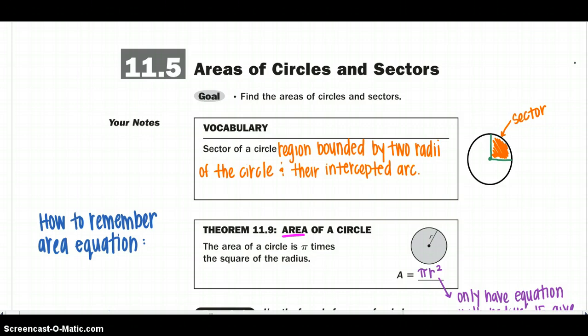A sector of a circle is the region bounded by two radii of the circle and their intercepted arc. So over here I have drawn a circle and I have drawn my two radii by the green portion and then the part that is called the sector would be my orange shaded area. So when we're talking about the sector or the area of a sector, you're talking about what is in between those two radii.